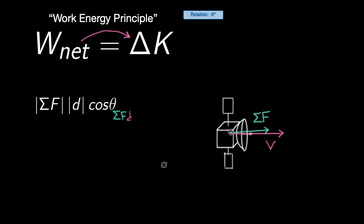If the net force has a component in the direction of motion, then the net work is going to be positive. Anywhere from like negative 89.9 degrees to positive 89.9 degrees, you've got a component in the direction of motion.